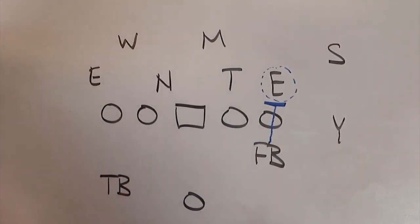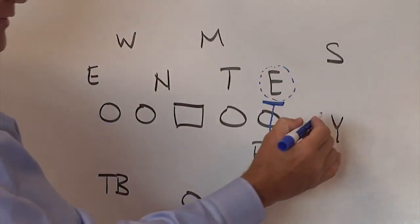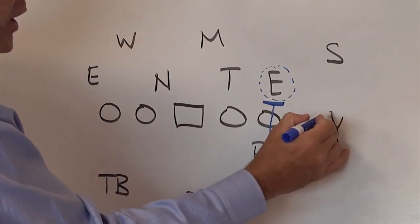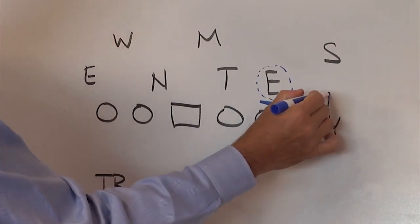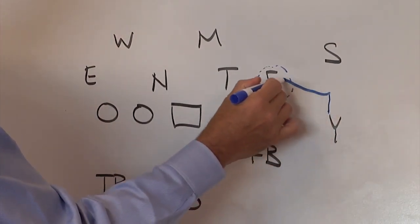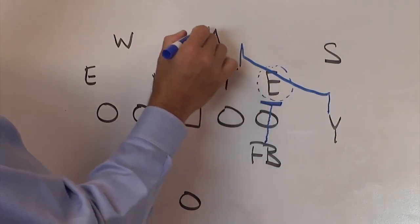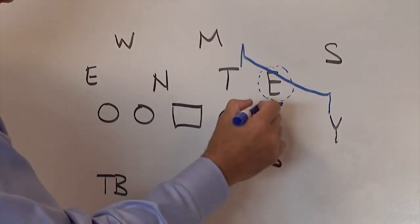We're going to get a four yard split with our Y, which is usually a bigger type receiver. He's going to have his inside foot up. He's going to push up with his eyes looking straight ahead for two steps. And then he is going really tight and he is cracking the first linebacker in the box. Can't let him come underneath.